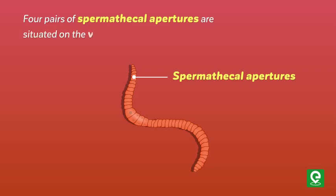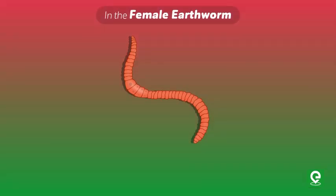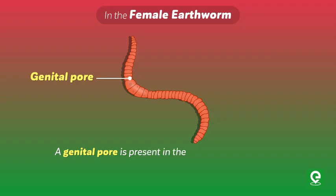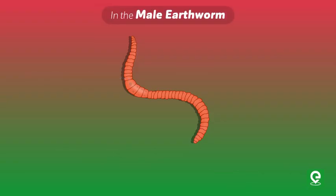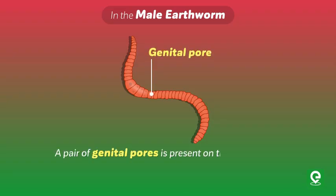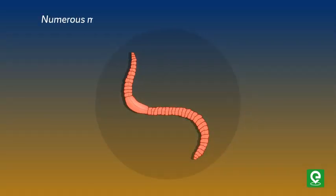Four pairs of spermathecal apertures are situated on the ventrolateral sides of the intersegmental grooves of segments five to nine. In the female earthworm, a genital pore is present in the mid-ventral line of the 14th segment, while in the male earthworm, a pair of genital pores is present on the ventrolateral sides of the 18th segment.